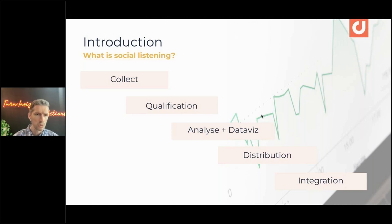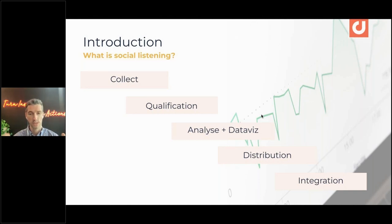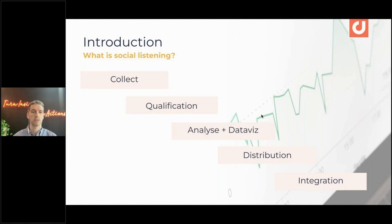The third component is analysis and data visualization. How do you consolidate all that data? Can you easily create simple graphs and dashboards? How easily can you share those visuals across the organization? Distribution — including automated distribution, customization, and limits on reports or newsletters — is also extremely important. As we say, if you're not visible, you don't exist, and that's very true within large organizations.